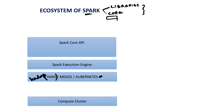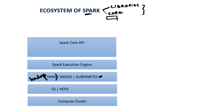Spark also does not offer any storage by default, but it allows us to process data stored in a distributed file system or distributed storage. The distributed storage systems available are S3, HDFS, Azure, Google File System, or Google Cloud Platform. The data can be stored in any of these file systems, and Spark is capable of processing data present in all of these. For cluster management, Spark is dependent on YARN, Mesos, or Kubernetes, and for storage it is dependent on one of these storage systems.